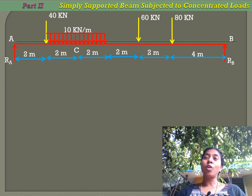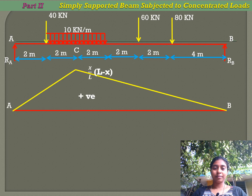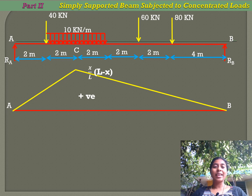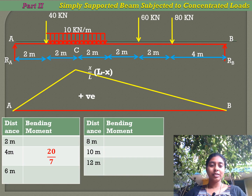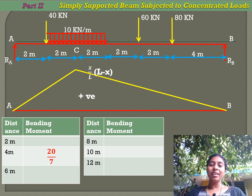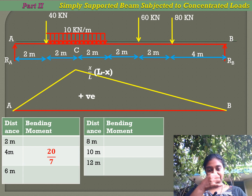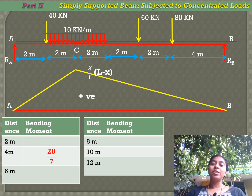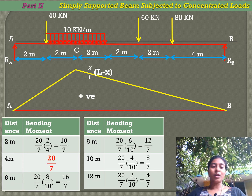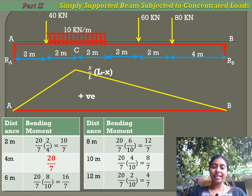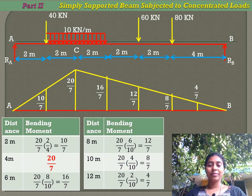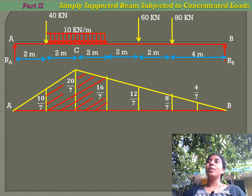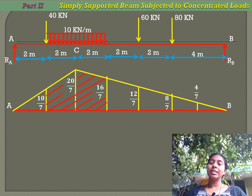Now we will see how to draw the bending moment influence line diagram. The ordinate is x/L multiplied by (L minus x), and our x is 4 meters. Applying x equals 4 meters, we get the maximum positive ordinate of 20/7. We then apply similar triangle principles to find the other ordinates for the bending moment influence line diagram.